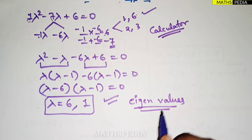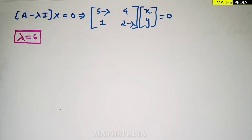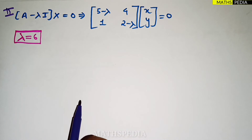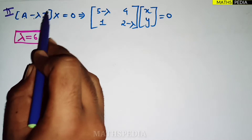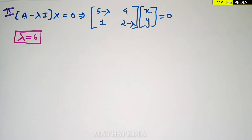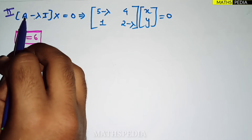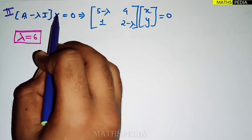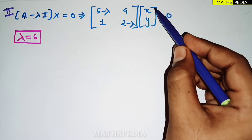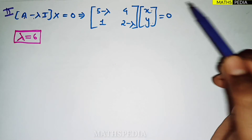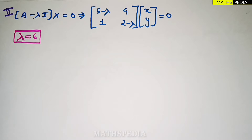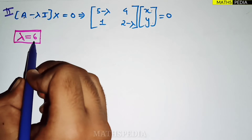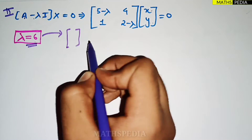The next step is to find the eigenvectors. The procedure is: (A − λI)·x = 0, where x is the column matrix [x; y] containing the unknown variables. For each eigenvalue you get a corresponding eigenvector.